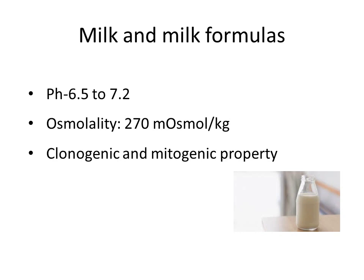Next is milk and milk formulas — pH of 6.5 to 7.2 and osmolality of 270 milliosmol/kg. Milk is regarded as a very good storage medium because it contains all the nutrients necessary for PDL cell metabolism. Most importantly, milk has clonogenic and mitogenic properties — it can form clones of fibroblasts, resulting in more regeneration of periodontal ligament fibers and a stronger reattachment from cementum towards alveolar bone. The clonogenic property of milk can be enhanced by chilling it with an ice pack — once chilled, cell viability is better maintained due to decreased shrinkage of periodontal ligament cells.